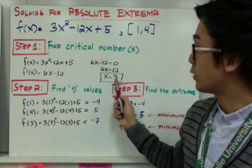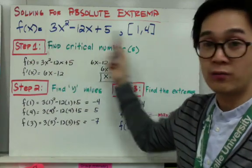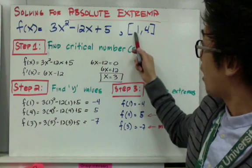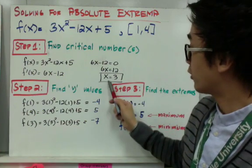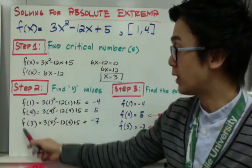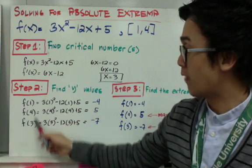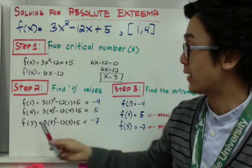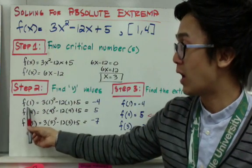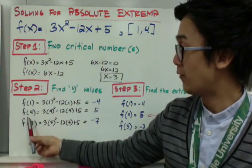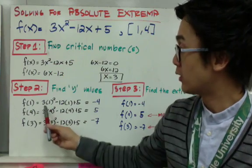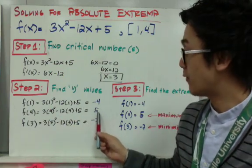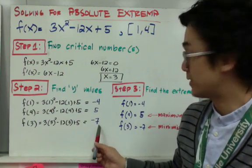The second step is finding the value of y based on your given interval and your critical number. We evaluate three values from the function f of x: f of 1, f of 4, and f of 3. Using the function, f of 1 equals negative 4, f of 4 equals 5, and f of 3 equals negative 7.